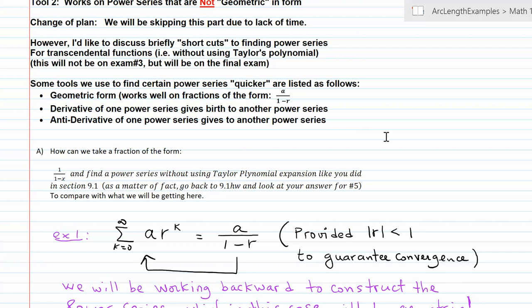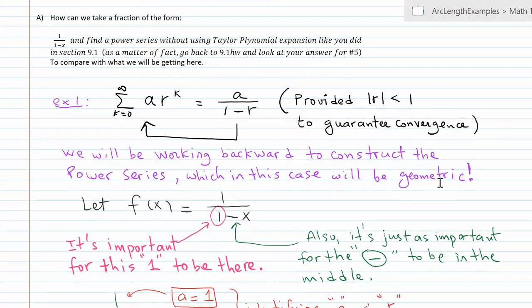Let's begin with a little review of what a geometric series looks like. So this is what we had in section 8.3: if you have a times r to the k, k starting from zero to infinity, provided that the absolute value of r, the common ratio, is less than one - this is the condition to guarantee that this geometric series will converge - and it converges to the sum a over 1 minus r.